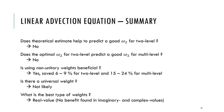The summary for this section is: the theoretical estimate does not help predict a good omega_2 for the two-level method. Also, the optimal omega_2 for the two-level method does not predict a good omega_2 for the multi-level method. Using non-unitary weights is beneficial, and it is difficult to have a universal weight. The best type of weight is real value; even though we explored imaginary and complex values, we find no benefit in using them.